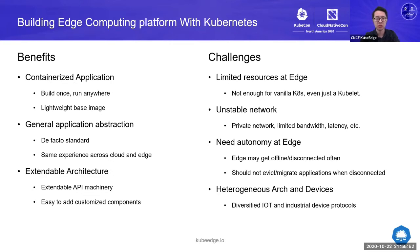But there are also some challenges. On the edge, one of the differences from the central cloud is that resources are quite limited, especially in IoT and industry cases. CAN servers can be down to 512 megabytes or even less. But for vanilla Kubernetes, almost the smallest deployment needs one gigabyte, and even just Kubernetes itself takes a lot of memory. Also, the network between cloud and the edge is quite different.